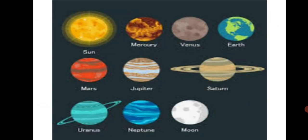The names of these planets we all know are Mercury, Venus, Earth, Mars, Jupiter, Saturn, Uranus, and Neptune. Along with that we have other celestial bodies like the Sun and the Moon.